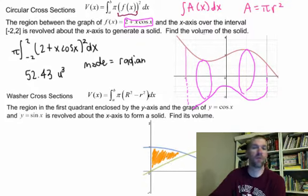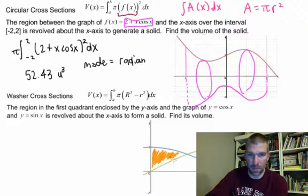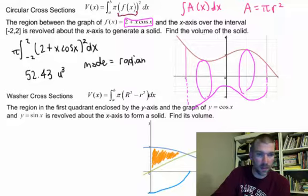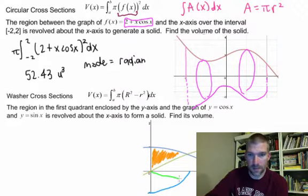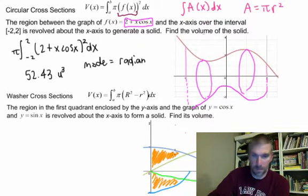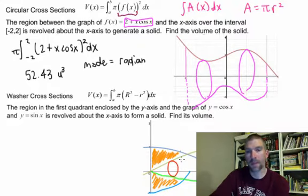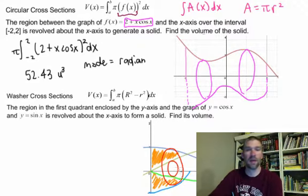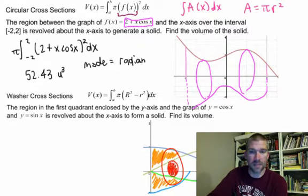If we take this part in here and rotate it around the x-axis, notice that we're going to have a space in the middle. So we would have our blue line would look like this. Our green line would look like this. And notice when we rotate that around, what's going to end up in there is some space in the middle where we have nothing.